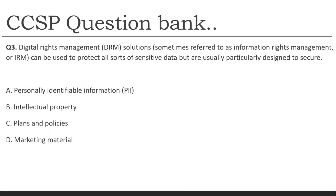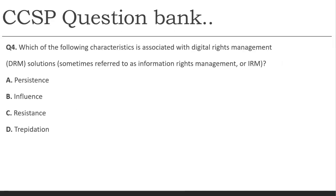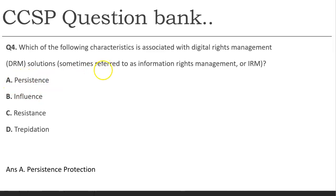Third question: DRM or IRM solutions can be used to protect all sorts of sensitive data, but they are particularly designed for which type of data? The answer is intellectual property rights data, especially copyright-protected data. Fourth question: which characteristic is associated with Digital Rights Management? The four IRM properties are: persistent protection, automatic expiration, dynamic access control, and continuous monitoring and logging. The answer in this case would be persistent protection.